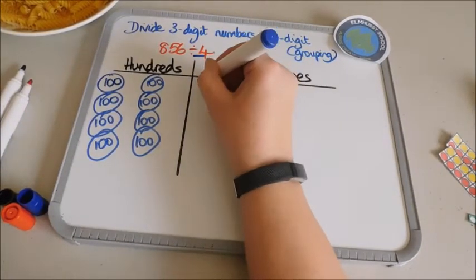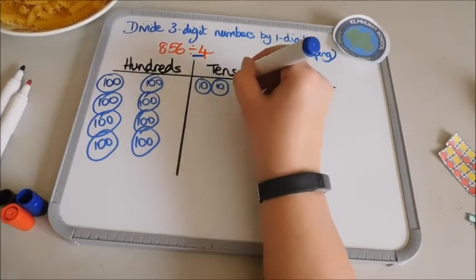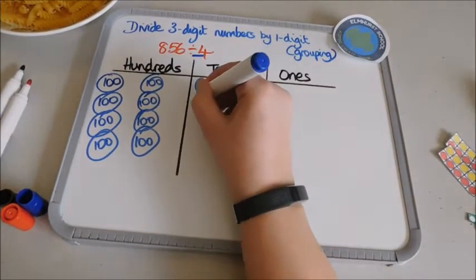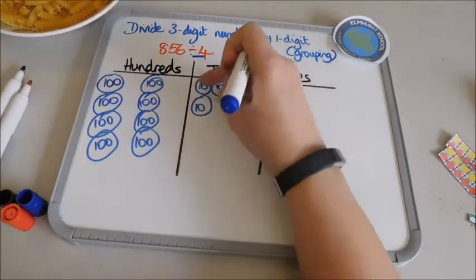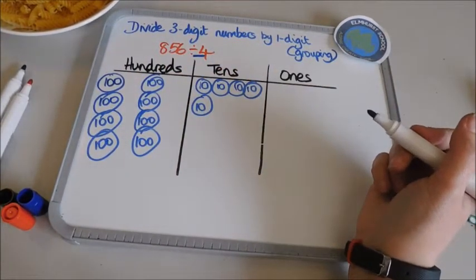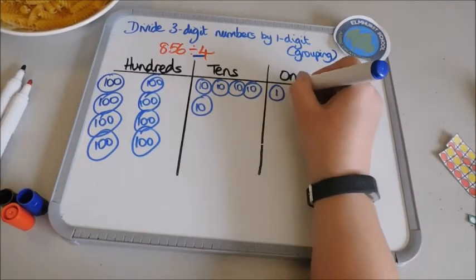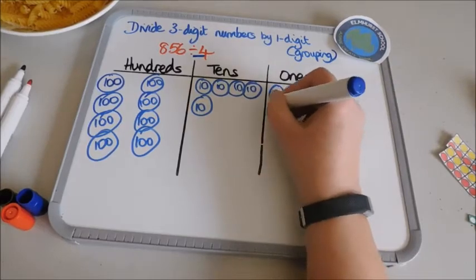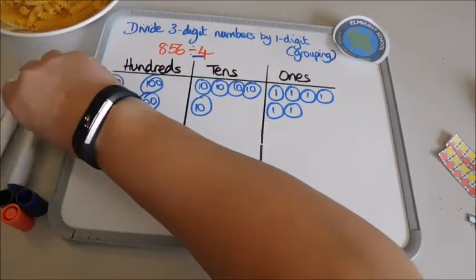And then I want my tens. So you can see that I've got fours there, fours there. And then my six ones: 1, 2, 3, 4, 5, 6.